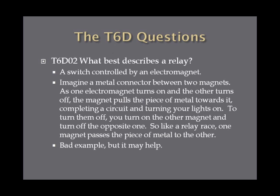What best describes a relay? A relay is a switch controlled by an electromagnet. Picture a piece of metal with two electromagnets on either side. To turn a switch on, you turn on one of the electromagnets, and that piece of metal gets pulled toward it. If that piece of metal is part of a circuit with current running through it, you complete the circuit and turn on whatever you need.